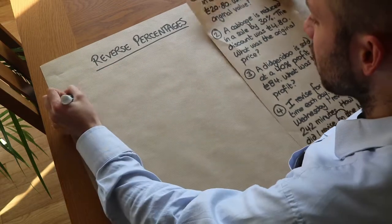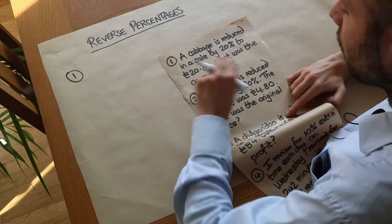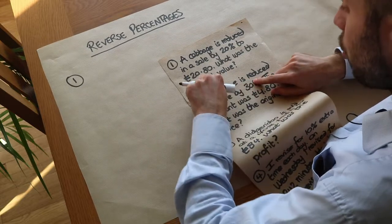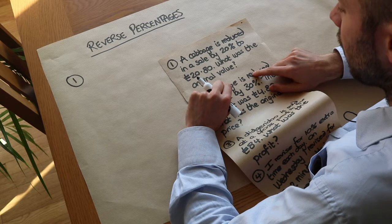So let's dive in immediately into some questions. We've got a cabbage is reduced in a sale by 20% to a value of £20.80. What was the original value?